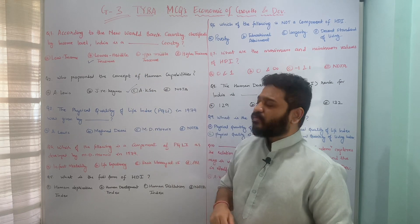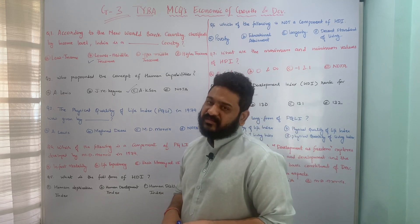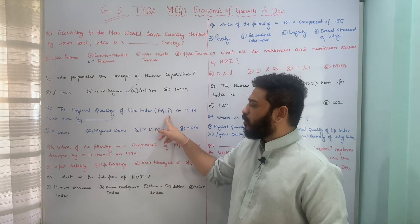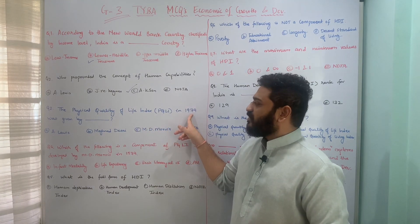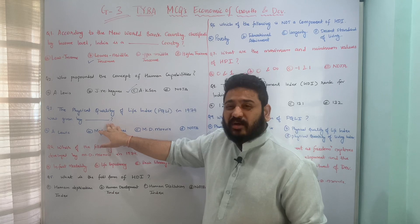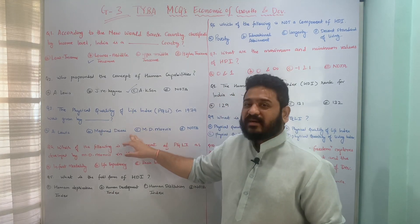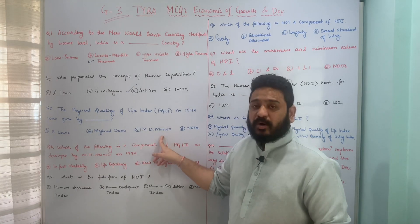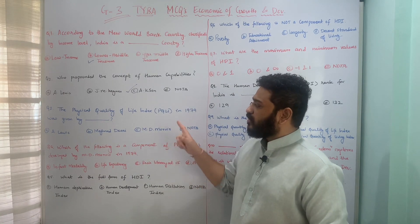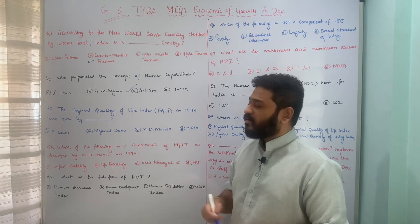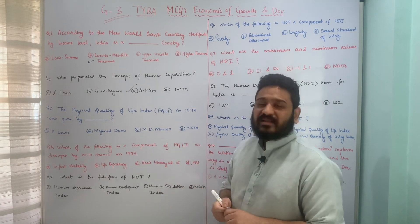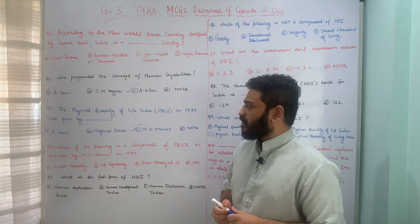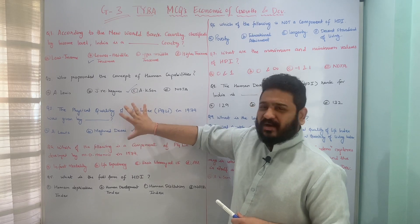The next question is in relation to the Physical Quality of Life Index. The Physical Quality of Life Index or PQLI in 1979 was developed by whom? The options are Arthur Lewis, Meghnaad Desai, M.D. Morris, or none of the above. The PQLI was given in the year 1979 by M.D. Morris, and therefore option C is the correct answer. I hope the question is clear.